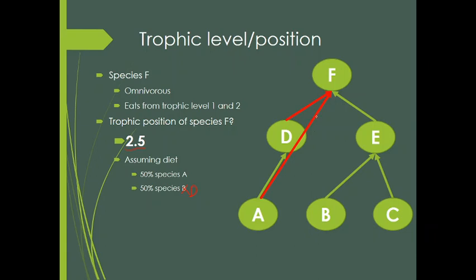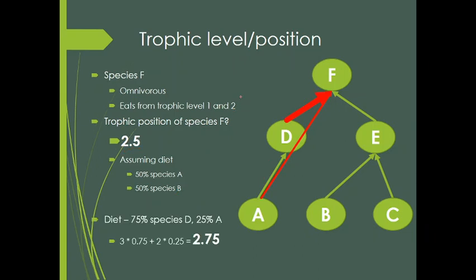You could say 50% of it is trophic level two, and then 50% of it — because it feeds on D, which is two links — so two plus one is three. Average two and three and you get two and a half. It becomes trickier if, say, 75% of its diet is from species D and 25% from species A, depicted by the different thicknesses of those lines. We would then expect species F to be higher than 2.5 — three times 0.75, plus two times 0.25 — giving an average of 2.75.